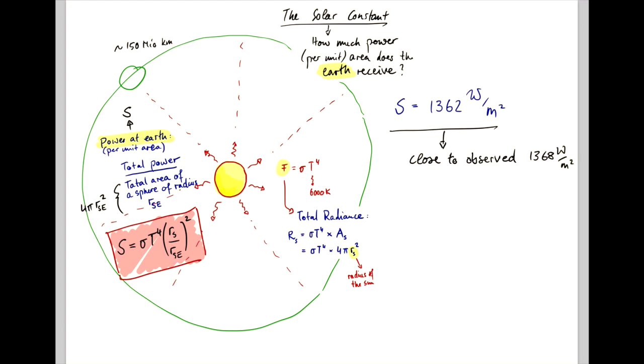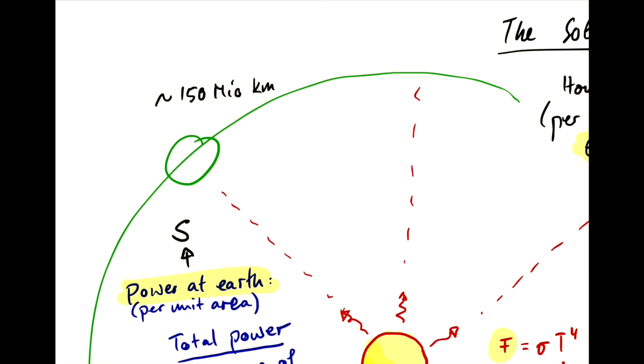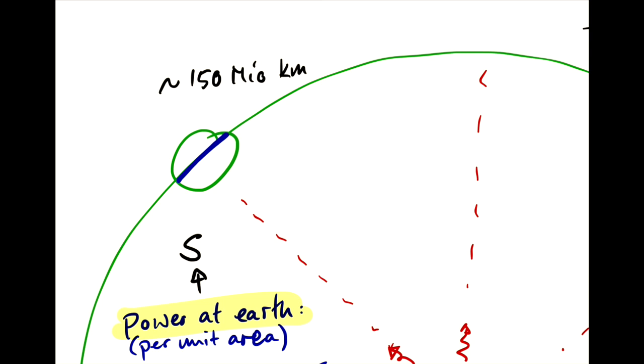Now to get to actually the solar constant as it is typically defined, there's one more nuance. The power received at the Earth's orbit, that's what we call S so far, is that for a cross-sectional area. But Earth is a sphere.